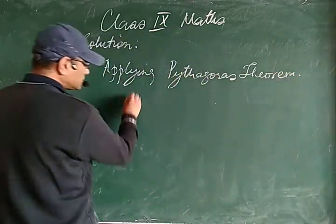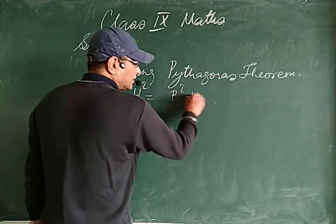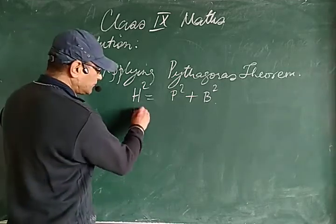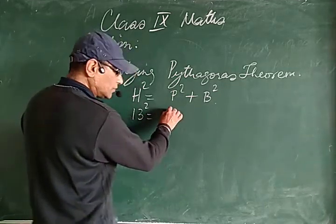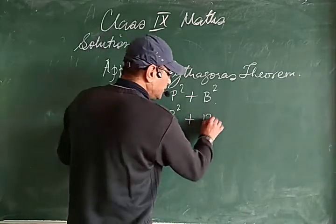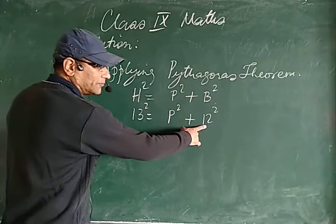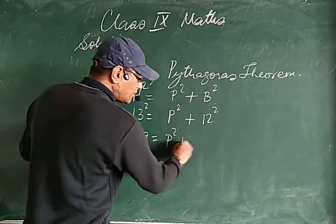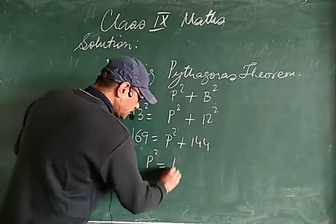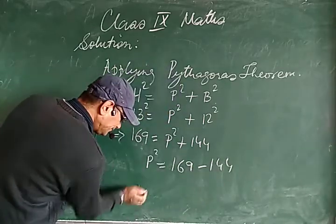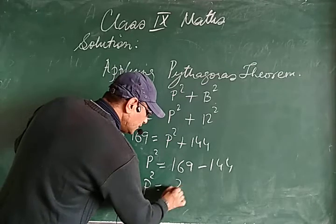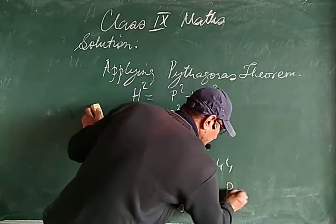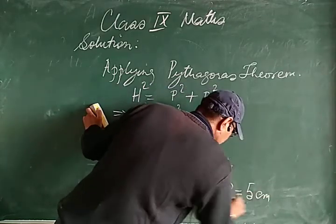Pythagoras's theorem says: hypotenuse² = perpendicular² + base². So 13² = perpendicular² + 12², which gives 169 = perpendicular² + 144. Therefore perpendicular² = 169 − 144 = 25, so perpendicular = √25 = 5 centimeters. Perpendicular and height mean the same thing.